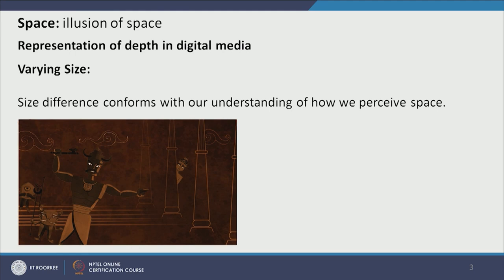We can present the depth or illusion of space in digital media in three different ways. One is by varying size. If an object's size is varying or differing, then we can have an illusion of space. For example, in this composition we have four columns — the column is smaller on one side and appears bigger on the other. There is also a change of color, which becomes dull, and so we have an illusion of space. This two-dimensional art appears three-dimensional with a feeling of depth.